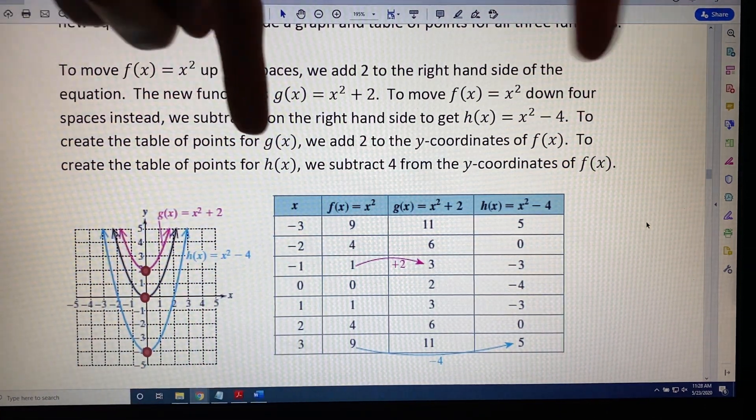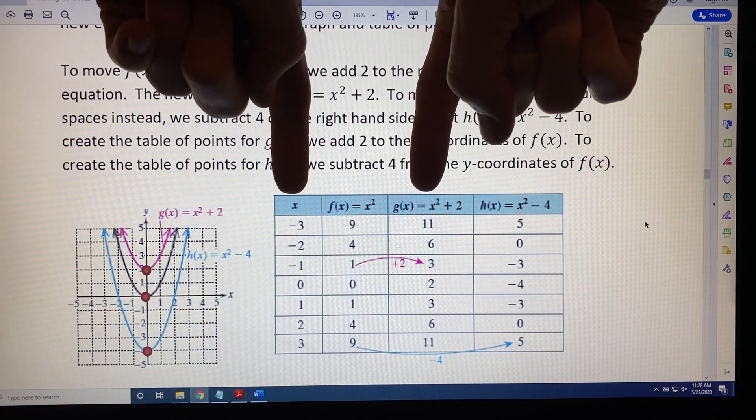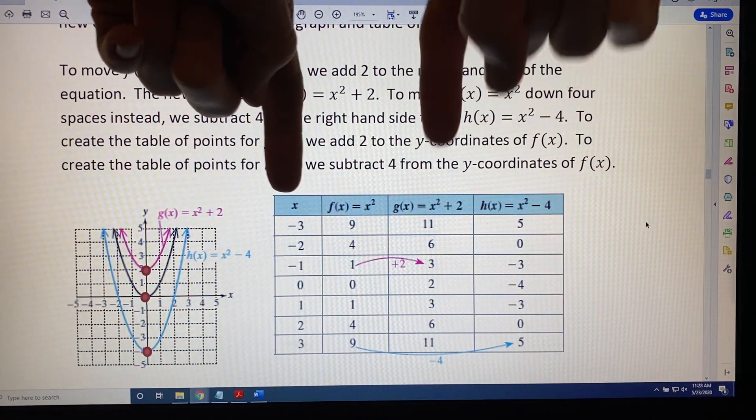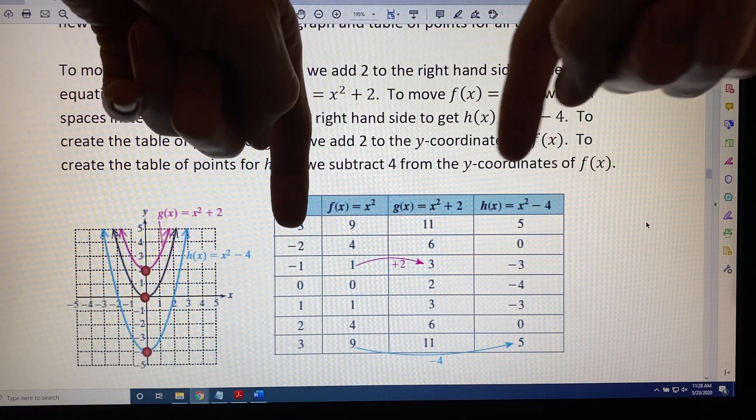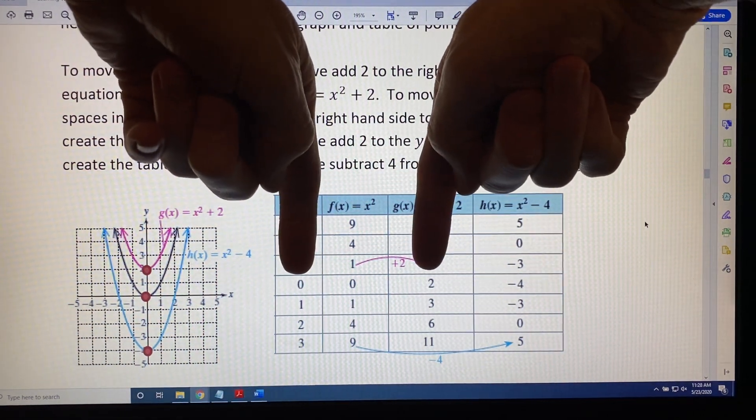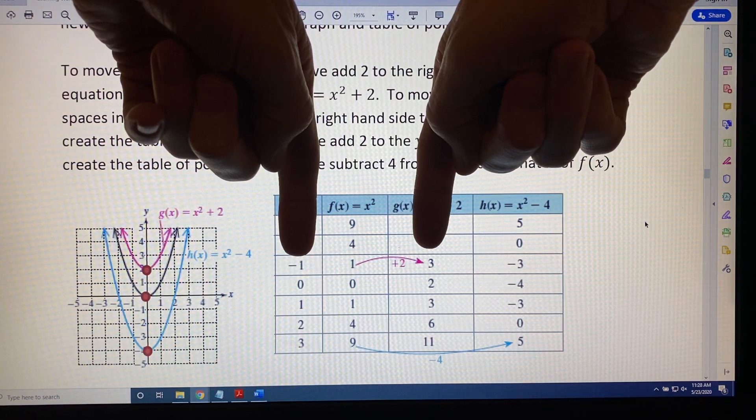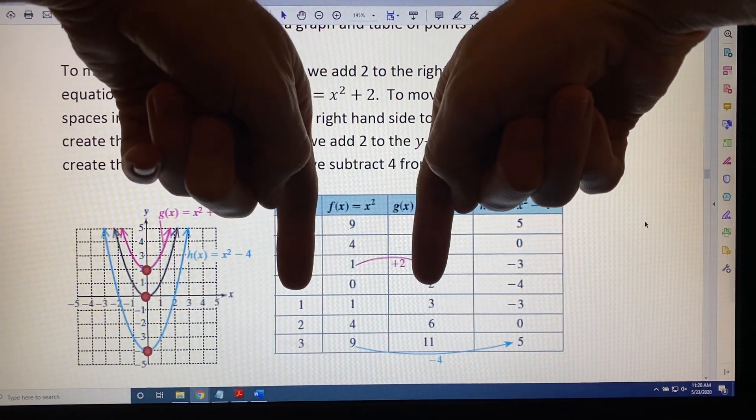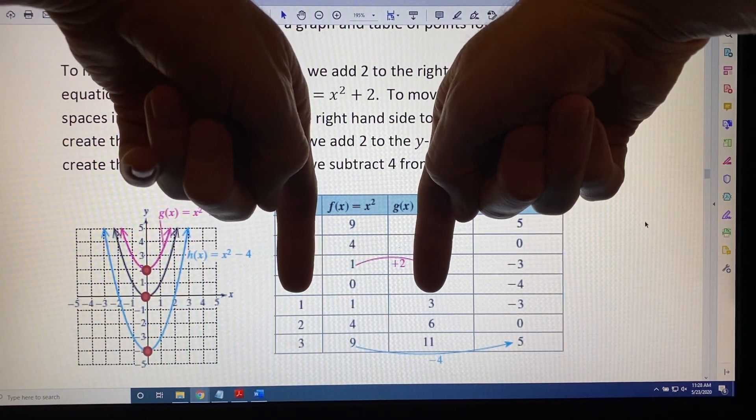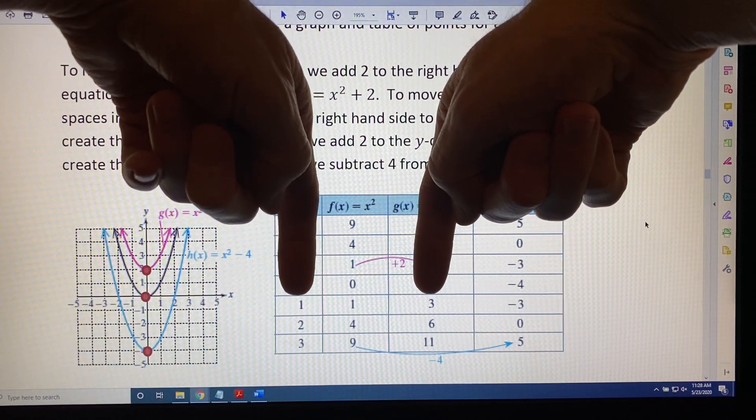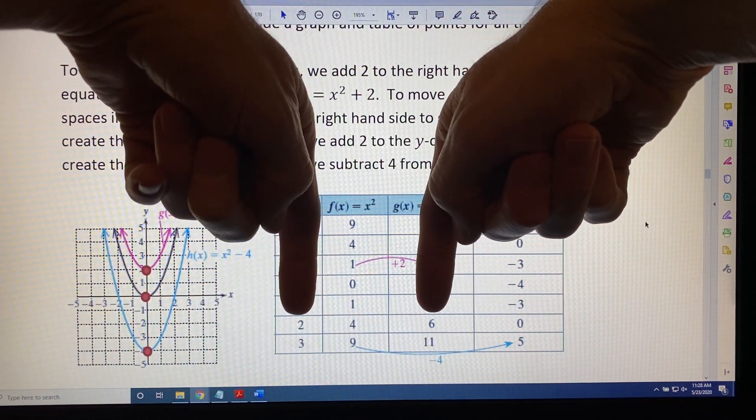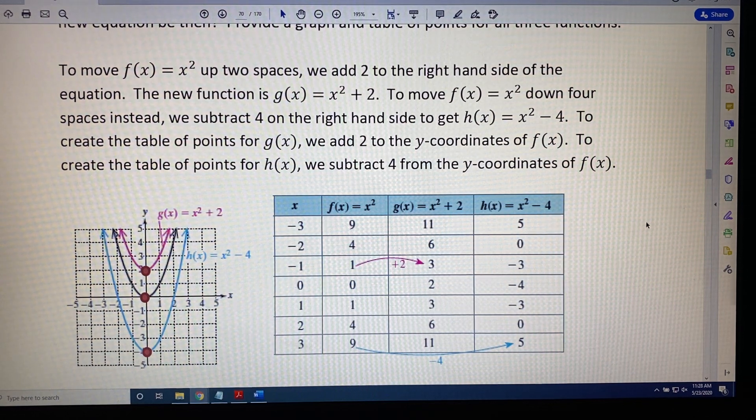And now when you put these two columns together, these are the ordered pairs of the pink graph. The pink graph includes points like (0, 2), which you can see visibly on the graph. (-1, 3), which you can see visibly on the graph. (1, 3), which you can see visibly on the graph. And if the graph went up higher, you could also see (2, 6), and so on and so on.